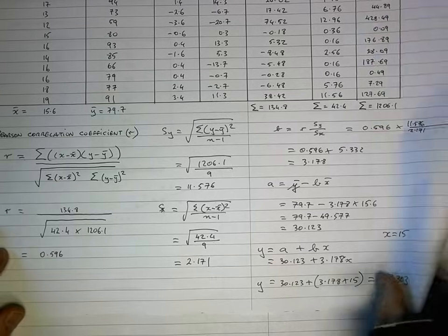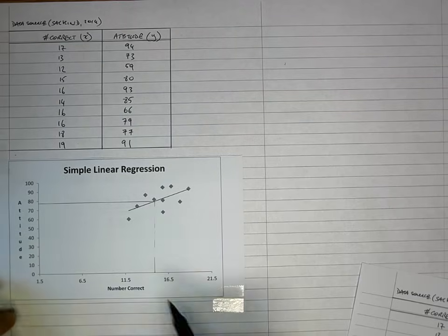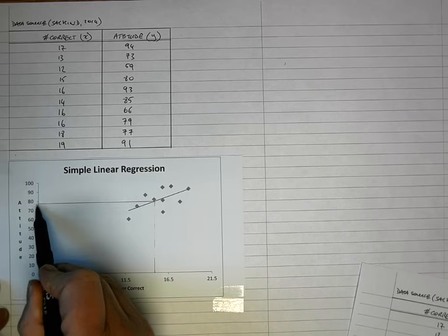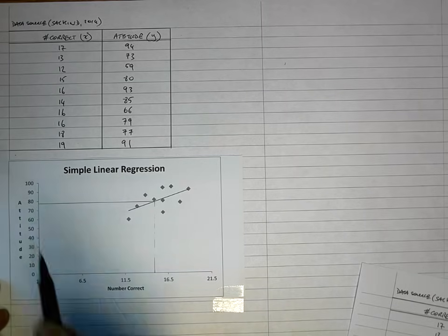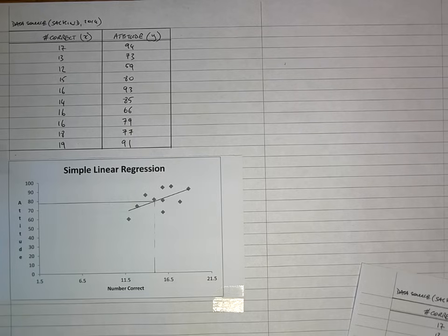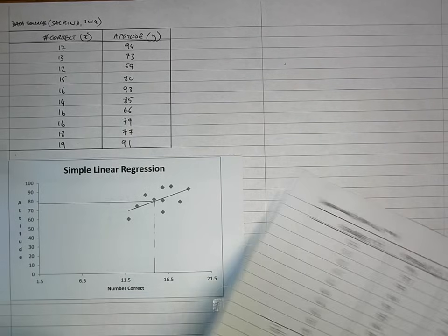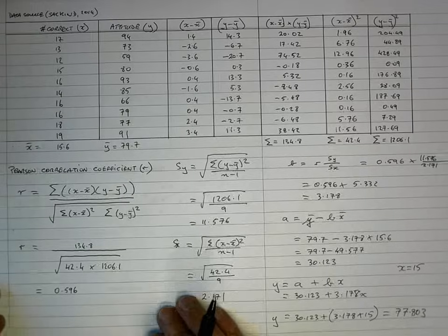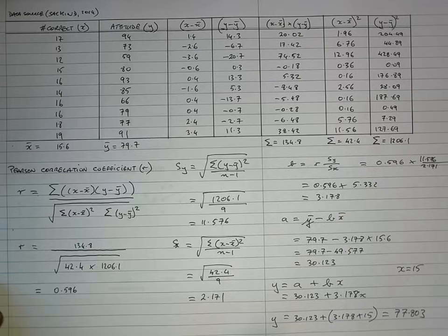Going back to my chart, if I have a value of 15 and go up and across, I'm getting a value in the very high 70s, just below 80 — so it's approximately correct according to my chart. That's how you perform simple linear regression by hand. I hope you found this video useful — thank you for your attention.